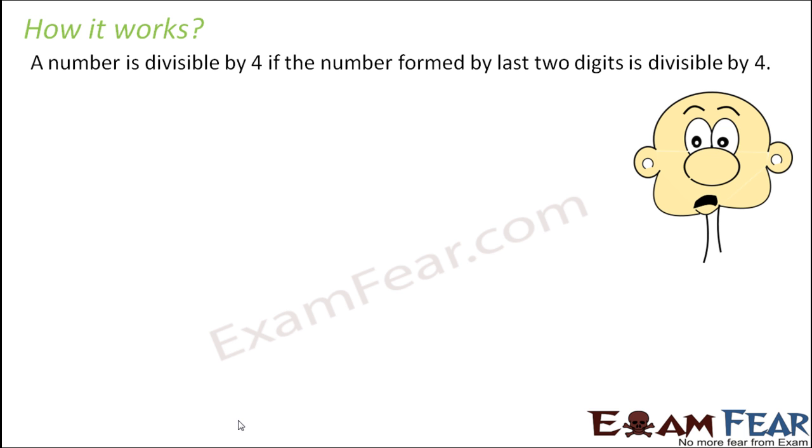Here again, you might be curious to know how this rule works, why do we need to verify the last two digits if they are divisible by 4. So let's take the same number, 341208. The first thing that we will do in this case also is we will expand the numbers.